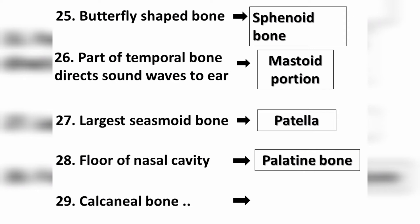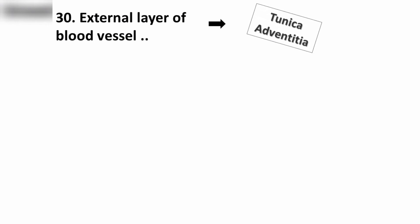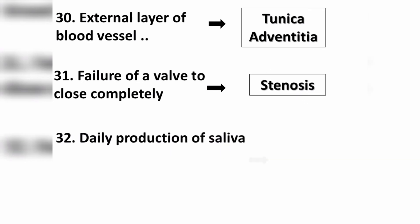Question number twenty-nine: the calcaneal bone is an irregular bone. Question number thirty: the external layer of a blood vessel is called the tunica adventitia. Question number thirty-one: failure of a valve to close completely is called stenosis.